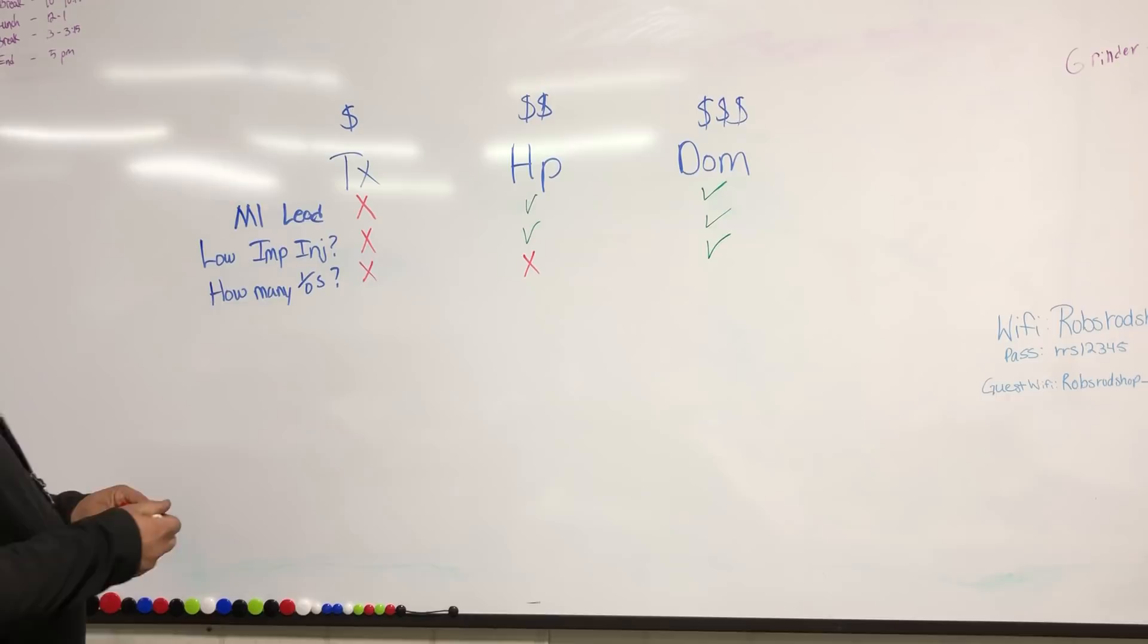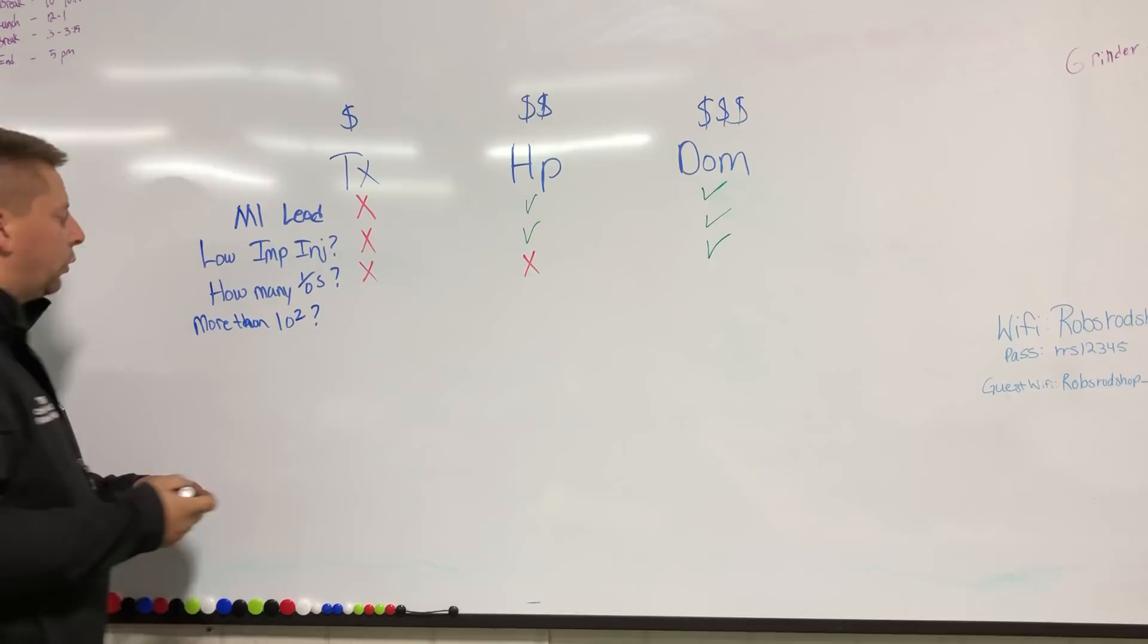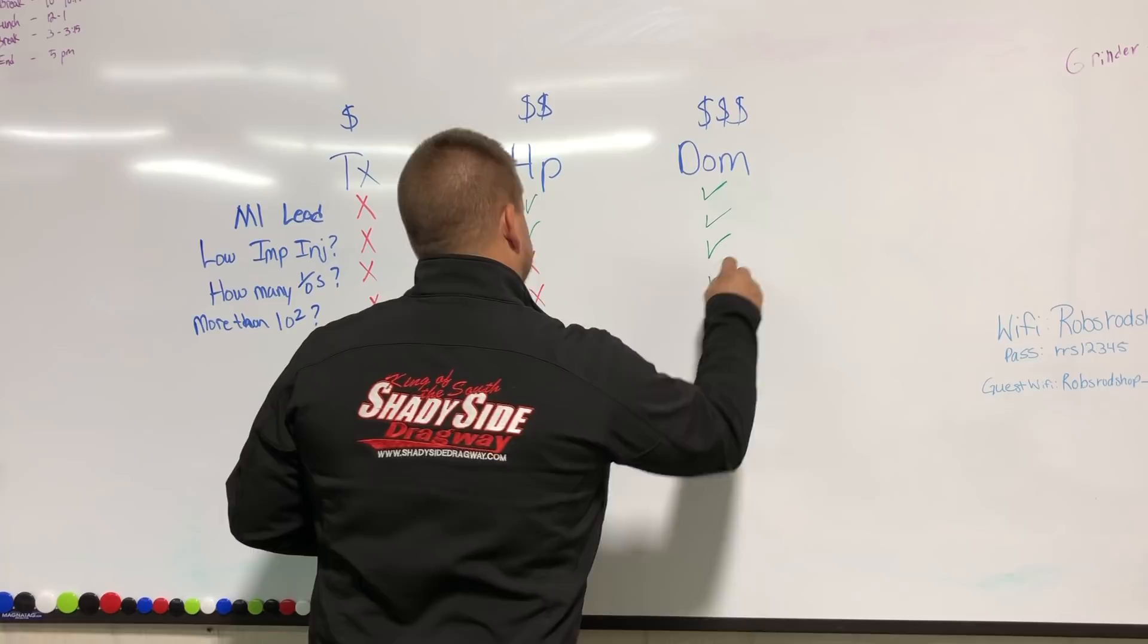Do you need more than one O2 sensor? If so, Terminator X is not the correct option. HP is not the correct option. The Dominator is.